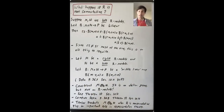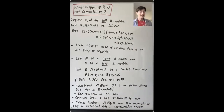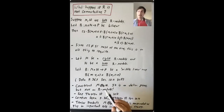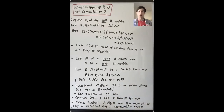So why do Dummit and Foote do it their way? Tensor products M tensor N where R is not necessarily commutative are more complicated, but that doesn't mean they're not important. In particular, these tensor products play an important role in representation theory, especially in talking about induced representations. Dummit and Foote present everything from the beginning in the non-commutative setting because they'll use it later in the section on representation theory. For the purposes of this course, it's enough to think about tensor products of R-modules over a commutative ring R. In the next lecture, we'll see examples and key properties of tensor products.